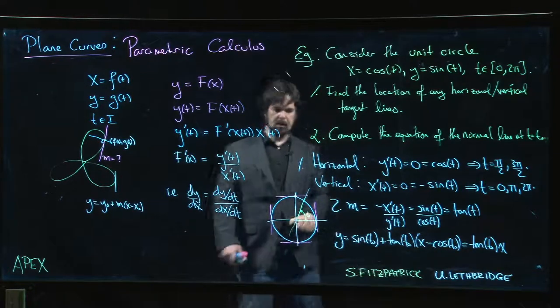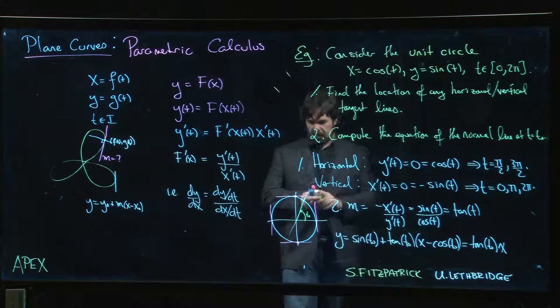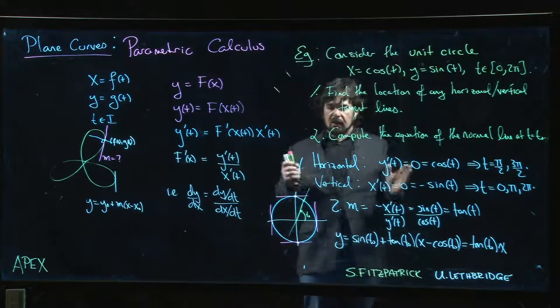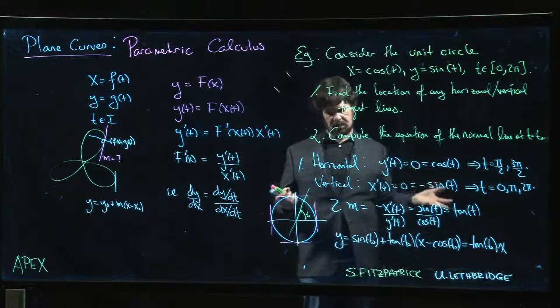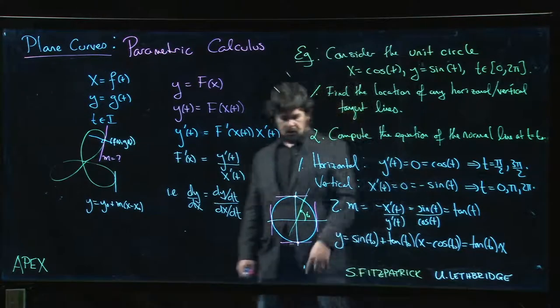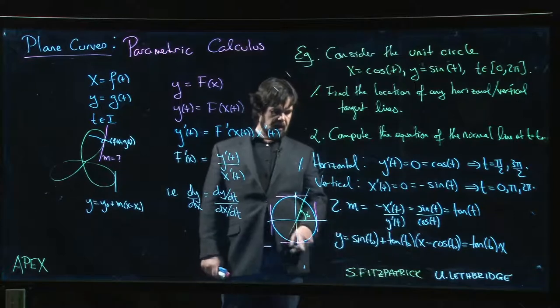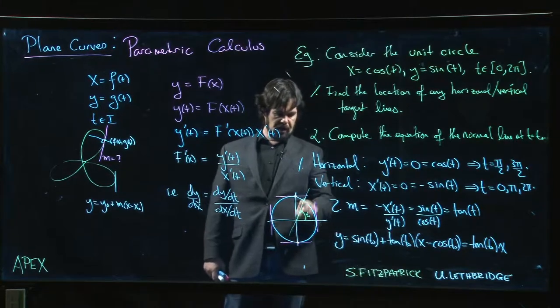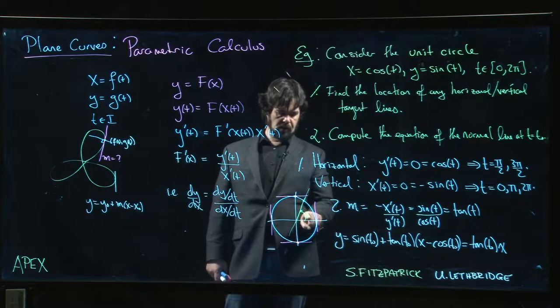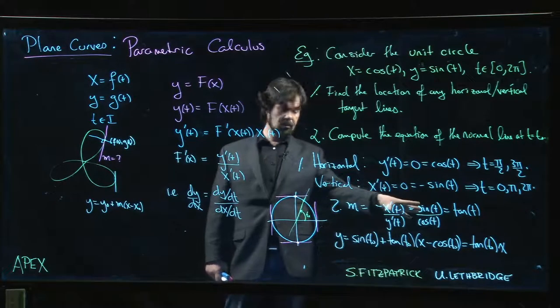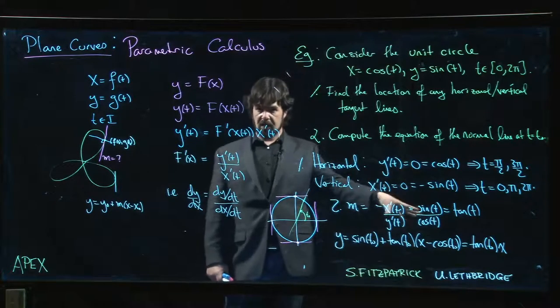So that's our normal line. And actually, there's two things that this confirms for us that we've probably noticed and understood about circles, but maybe we didn't have a solid method for showing. One being that the slope of any ray coming out from the origin corresponding to an angle of t₀, that slope is given by the tangent function. Tangent gives us slope.